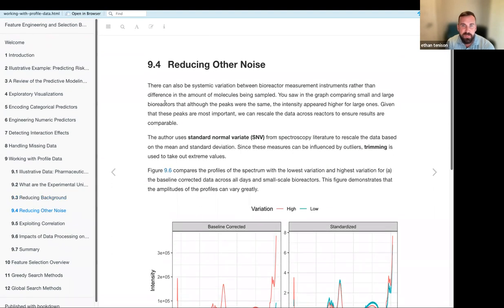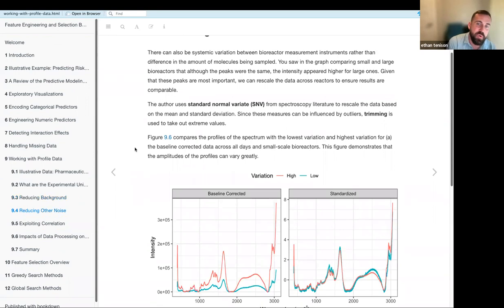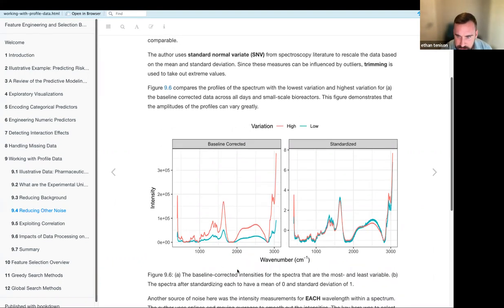The next couple steps have to do with taking out more systemic variation between the bioreactor measurement instruments. And so like I showed on maybe the first or second page, there is a difference between the small reactors and the large reactors. And that for some, whatever reason, on average, the large reactors look like they're more intense than the small ones. And that might not necessarily be the case. That could probably be that there is some noise with the measurement instruments, for example.